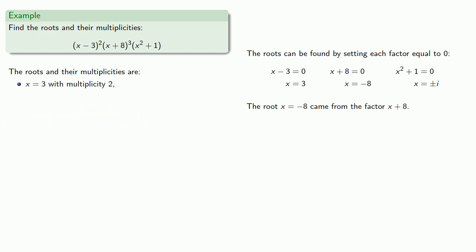The root x equals negative 8 came from the factor x plus 8. This factor appears three times, so the multiplicity is 3. And the roots x equals plus or minus i came from the factor x squared plus 1 equal to 0. This factor only appears once, so the multiplicity of these roots is 1.